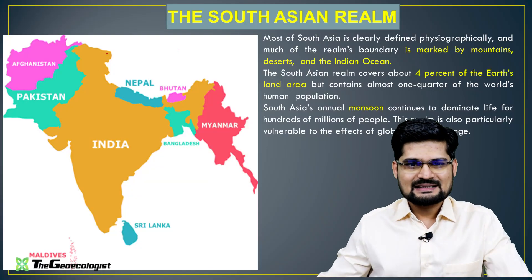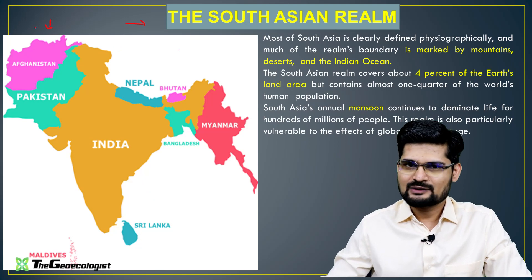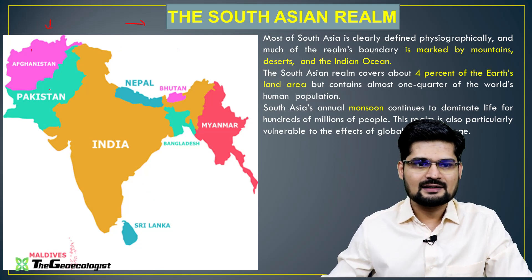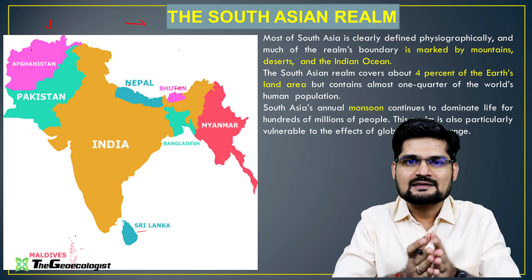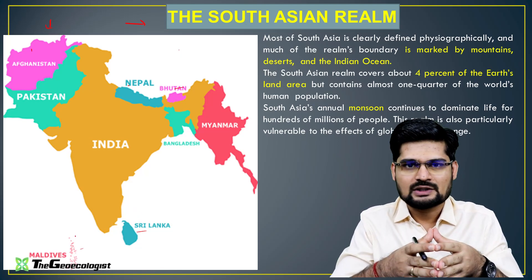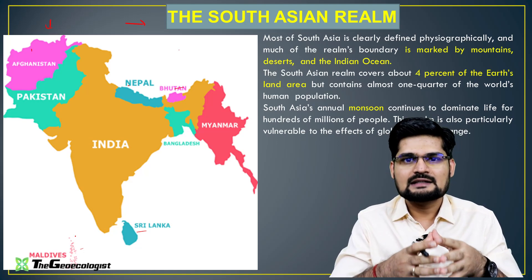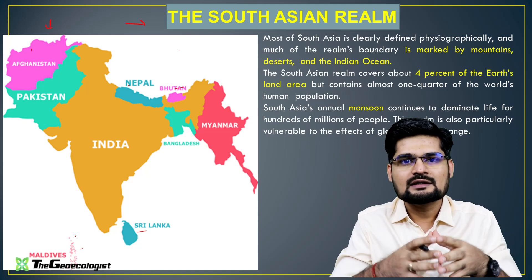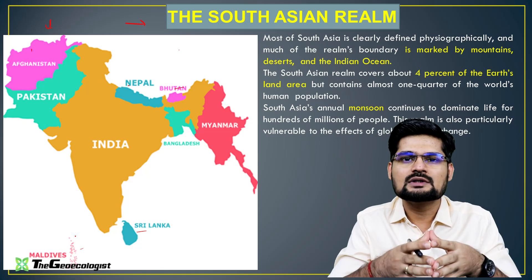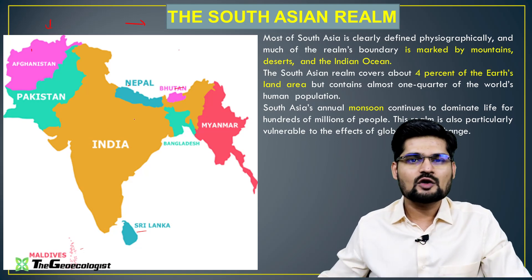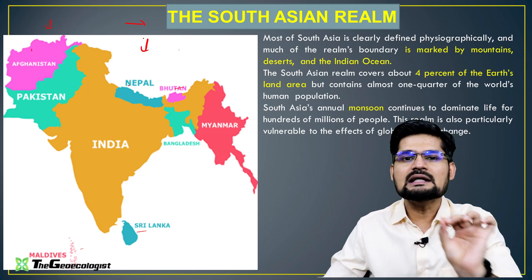The South Asian realm comprises countries including Afghanistan, Pakistan, India, Nepal, Bhutan, Myanmar, Bangladesh, and some islands — Maldives and other ocean islands. This region is also called a subcontinent area; it's as huge as a continent but is part of Asia, so it's called the Indian subcontinent. This realm has unique characteristics in many aspects.